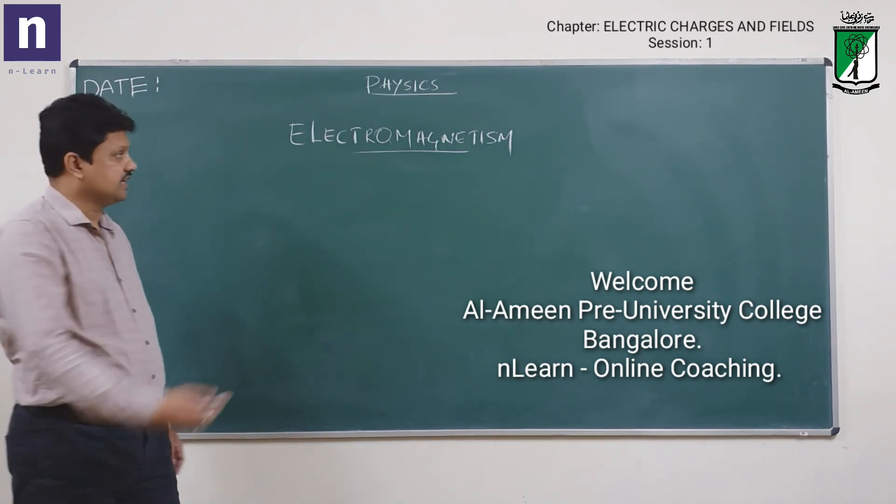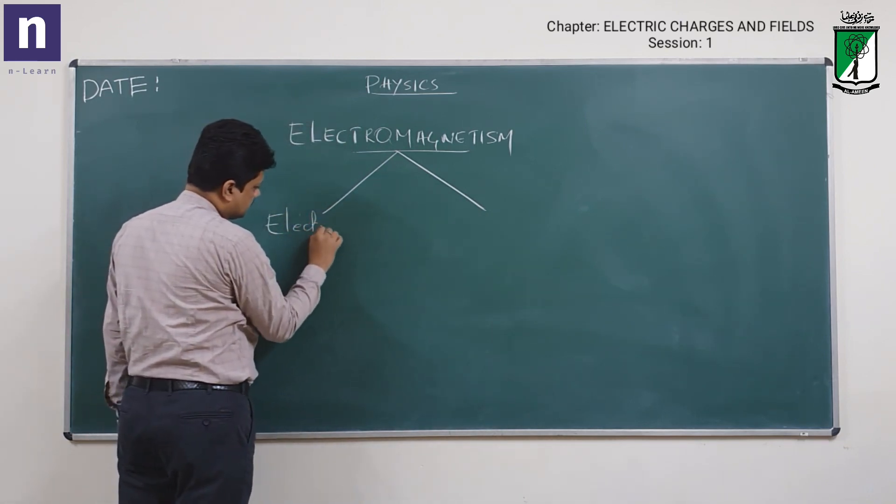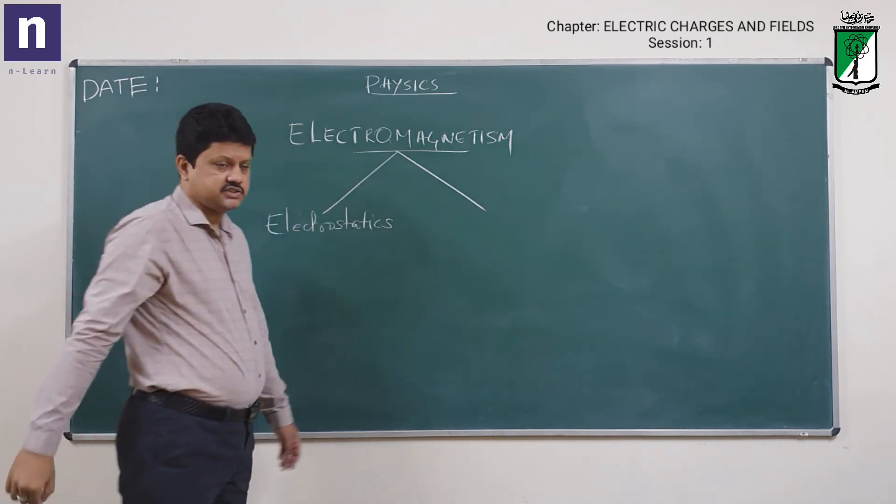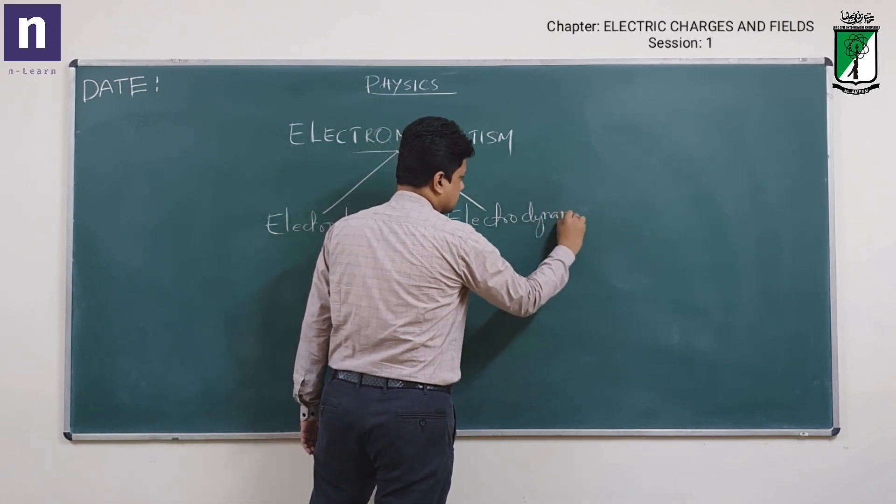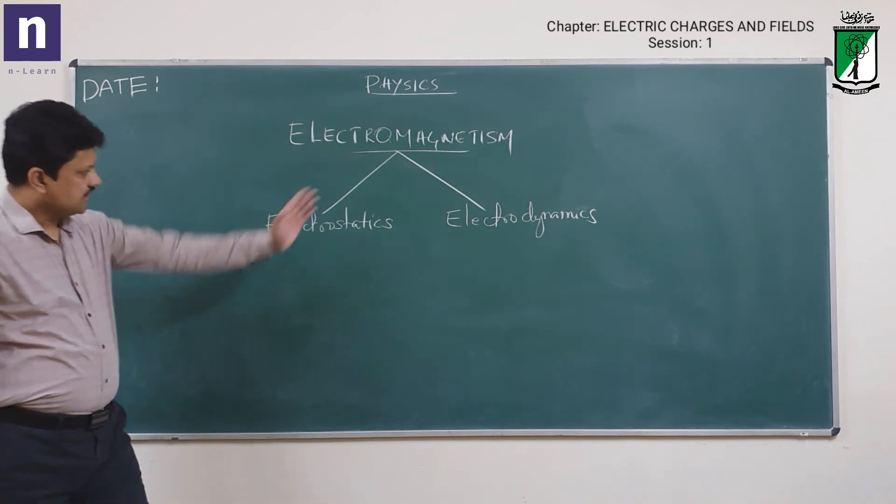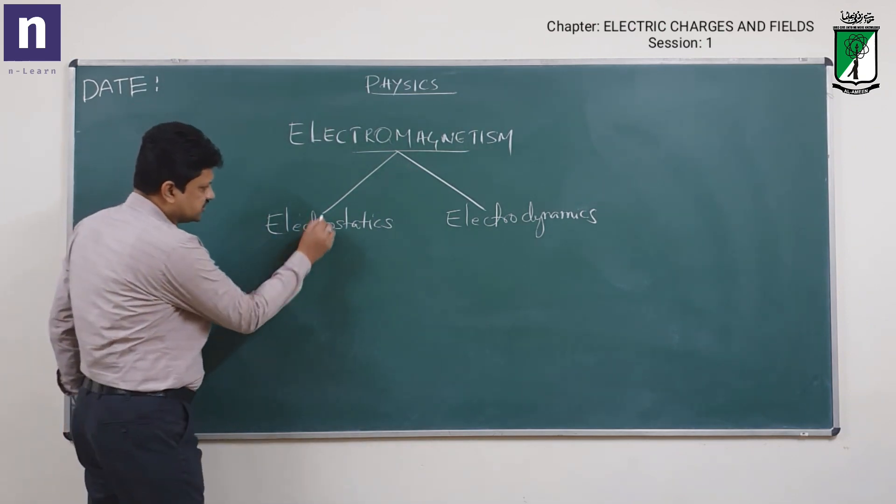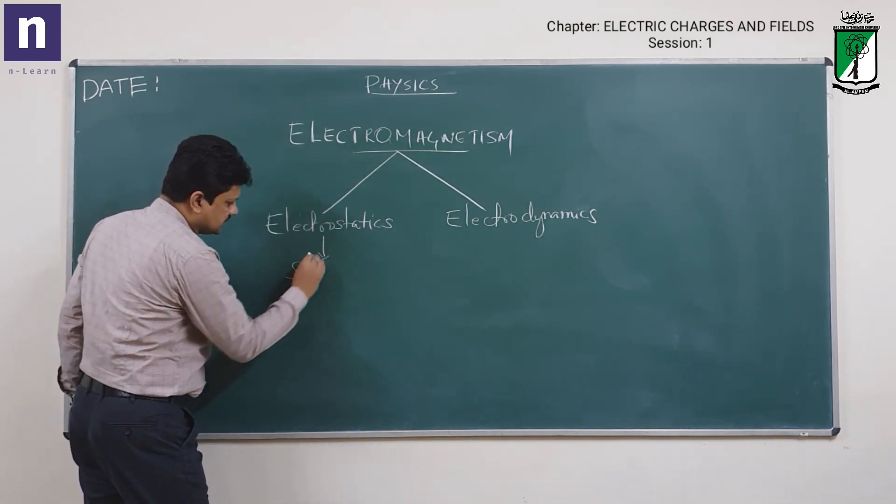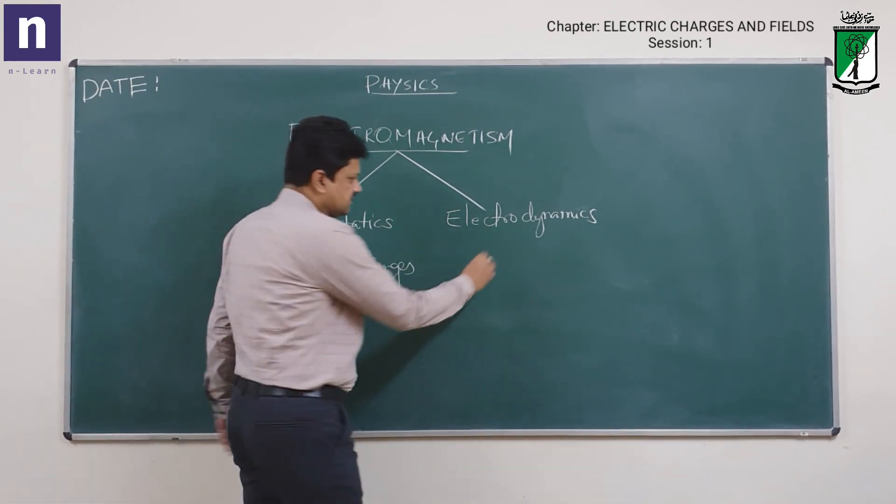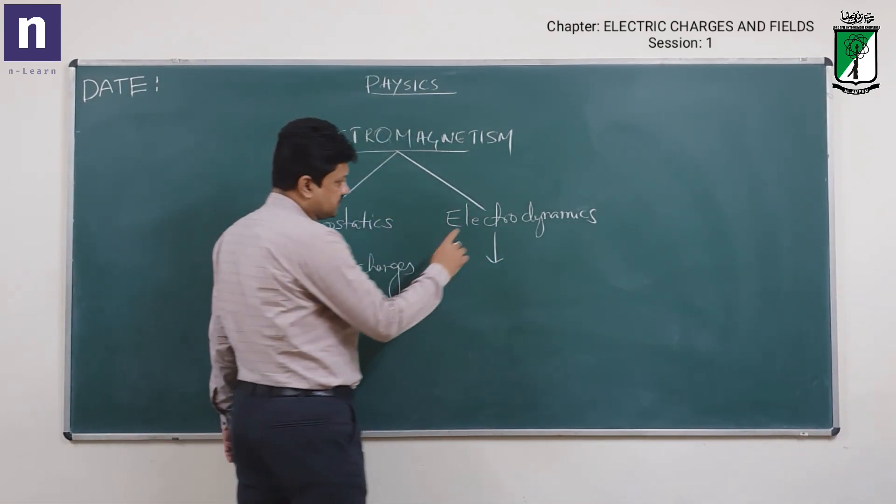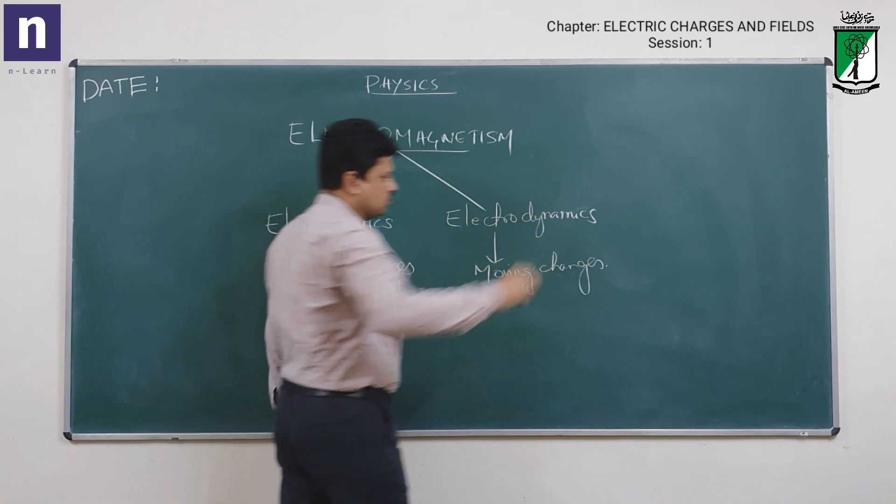Electromagnetism is an important branch of physics which has mainly two parts. One is electrostatics and the second is electrodynamics. As the name itself says, statics and dynamics. This branch deals with static charges, whereas electrodynamics deals with moving charges.